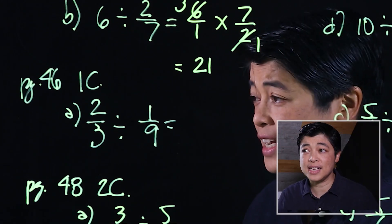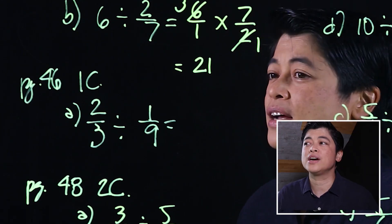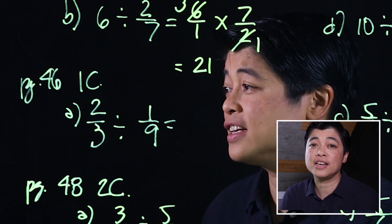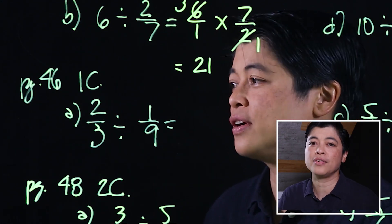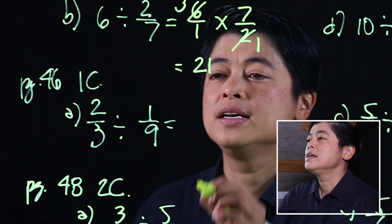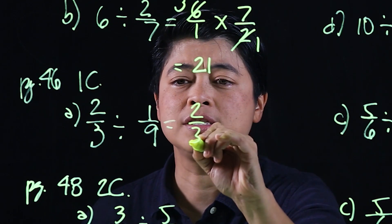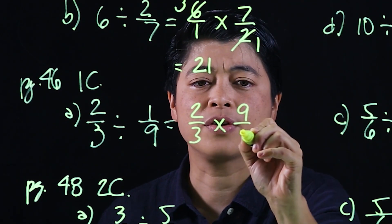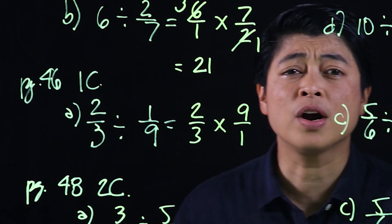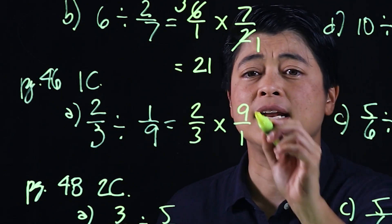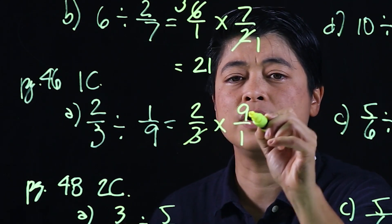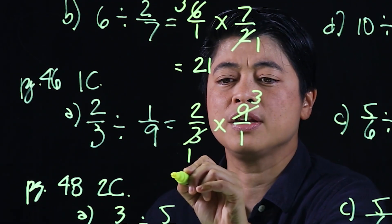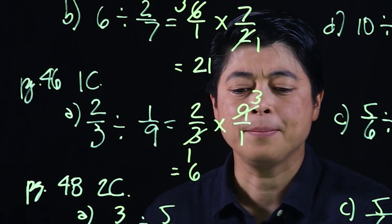Going to page 46, it's now a fraction divided by a fraction. When we have a fraction divided by a fraction, it's just the same as the previous problems. So this is 2 thirds — can't divide — times 9 over 1. I look for what can cancel, and clearly the 3 will go into both of these. That will be 1 and 3. The answer should be 6.